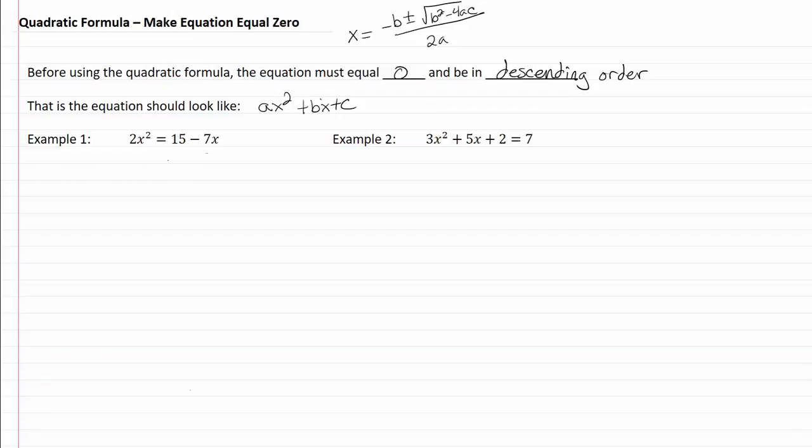So in example one, we need to move our fifteen and our seven x over and write it in descending order. So we have 2x squared plus 7x minus 15 equals zero.